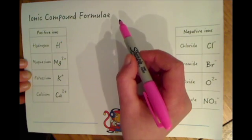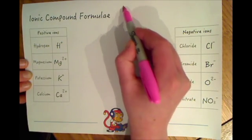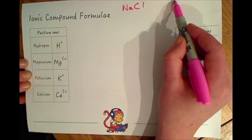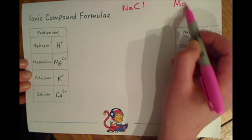Examples of ionic substances would include things like sodium chloride and magnesium chloride for example.